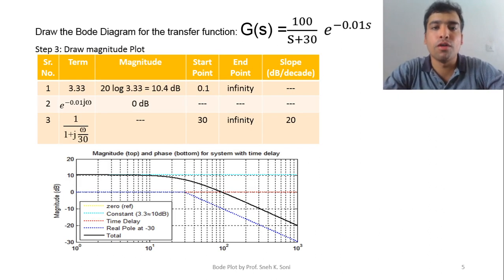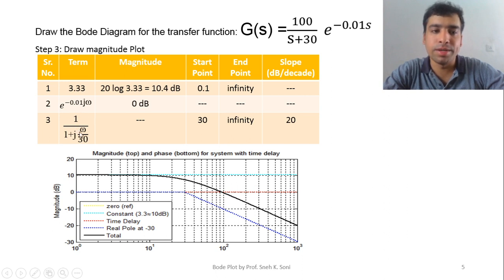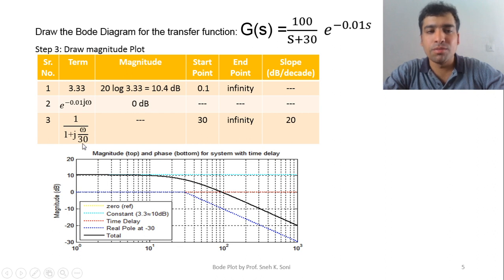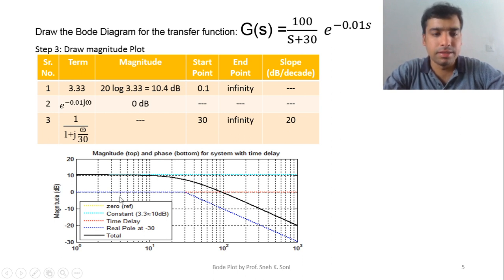Now we plot the magnitude plot, starting by making a table. The terms are: constant term 3.33, delay term e^(-0.01jω), and a single first-order pole. The magnitude of the constant term is 20·log(3.33) = 10.4 dB, starting from frequency 1 (10^0) to infinity with no slope change. The delay term has no magnitude change — all values are dashed. For the first-order pole, the corner frequency is 30, and the slope becomes -20 dB/decade from that point.